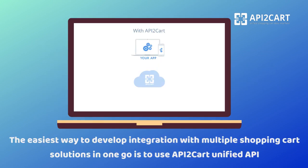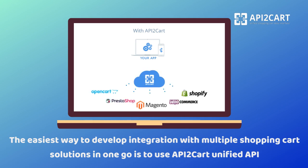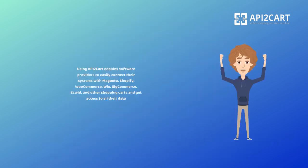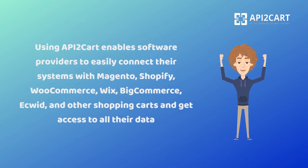The easiest way to develop integration with multiple shopping cart solutions in one go is to use API2Cart Unified API. Using API2Cart enables software providers to easily connect their systems with Magento, Shopify, WooCommerce, Wix, BigCommerce, Ecwid, and other shopping carts and get access to all their data.